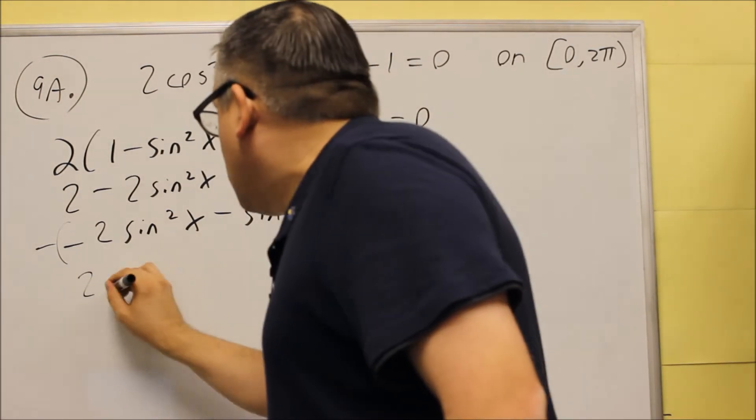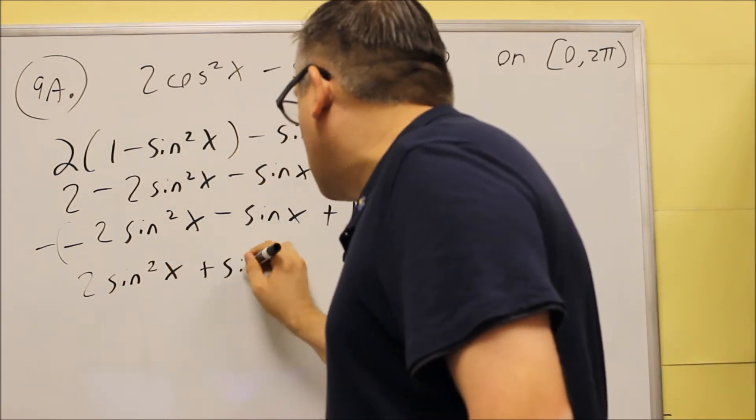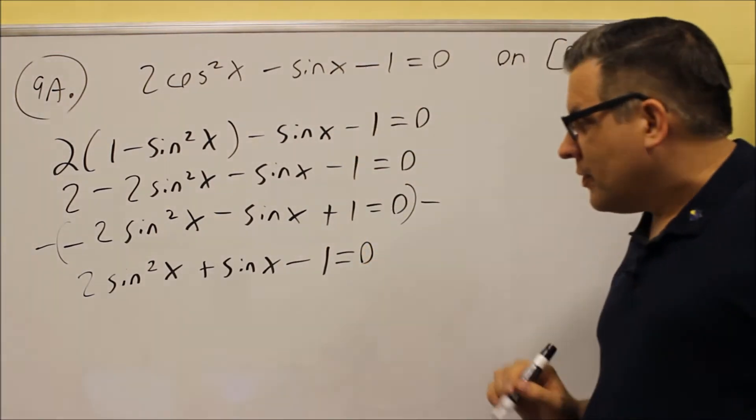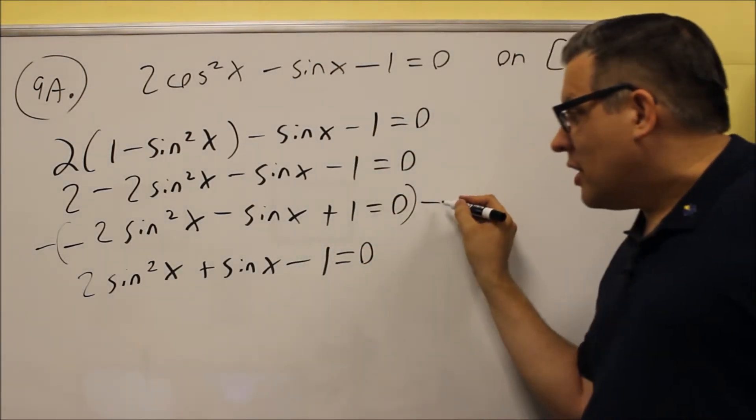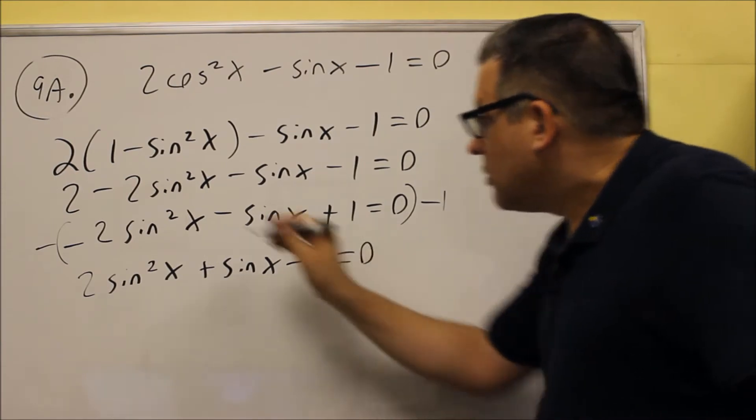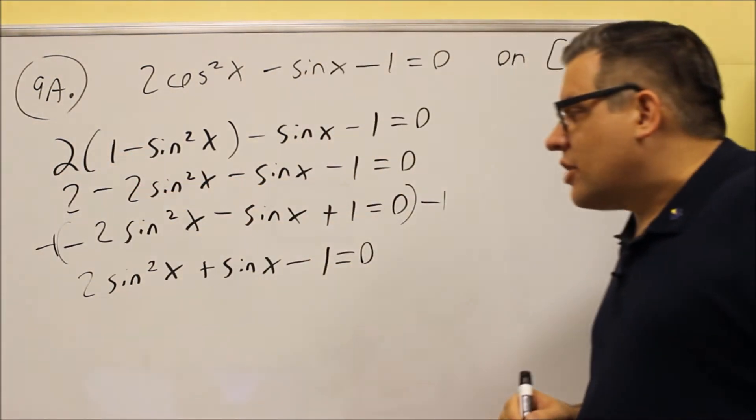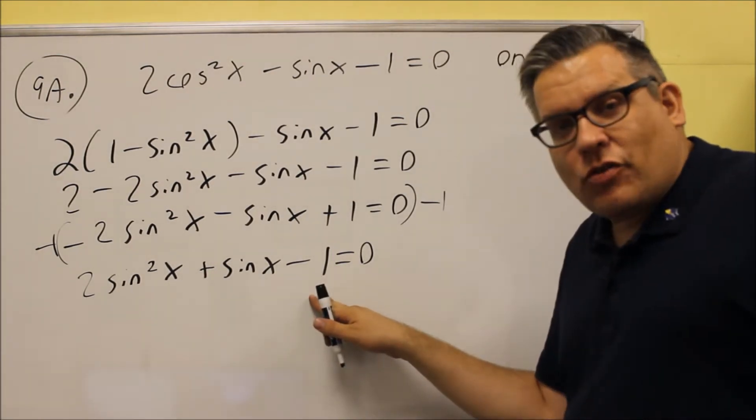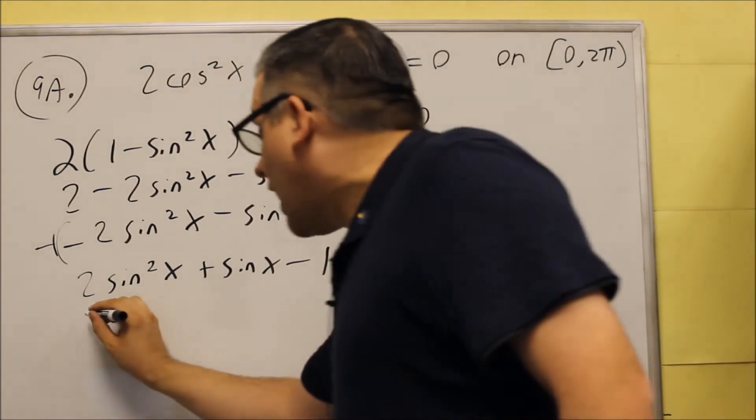You get 2 sine squared x plus sine x minus 1 equals 0. So again, we multiply both sides by a negative. Negative 1 is what we did on that step. Now we have, we got rid of the negative in front. We're ready to do factoring.